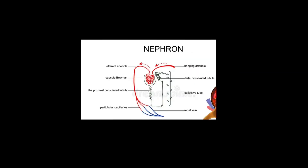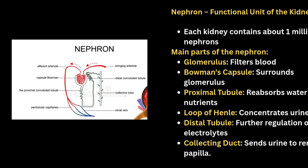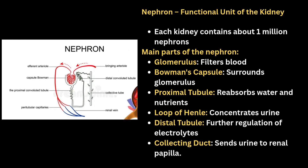Next is the nephron. The nephron is the functional unit of the kidney. Each kidney contains about one million nephrons. The main parts are the glomerulus and Bowman's capsule, proximal tubule, loop of Henle, distal tubule, and collecting duct.